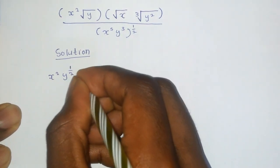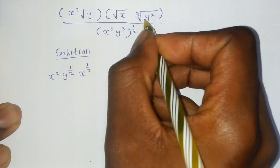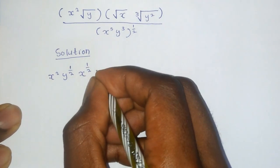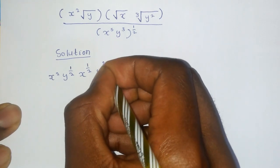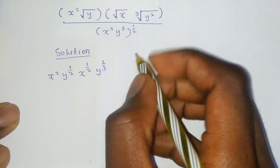This is the same as x raised to a half. And this one is the same as y raised to 2 divided by 3. Because you are using this principle.